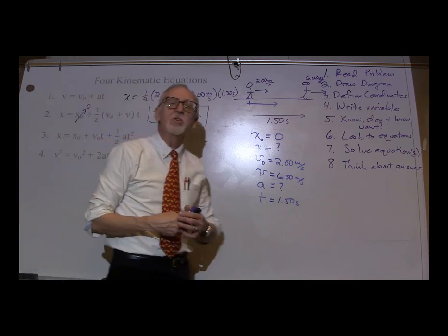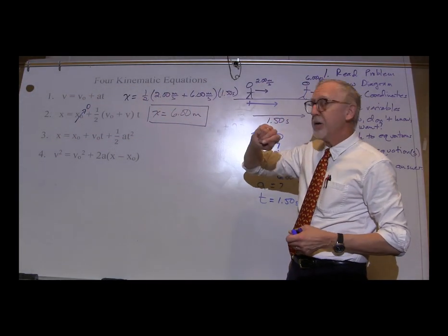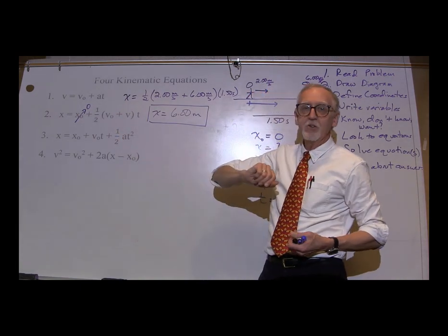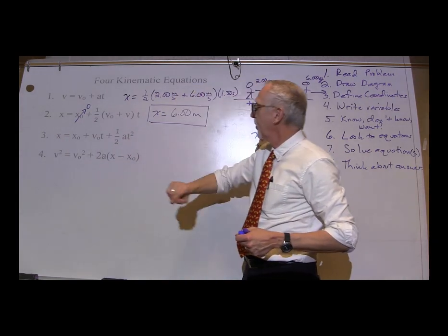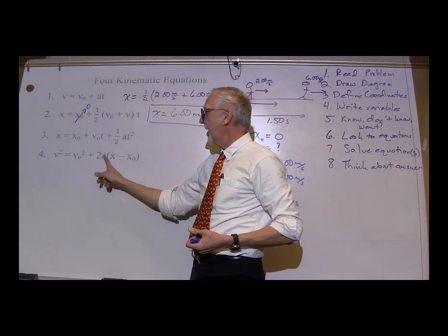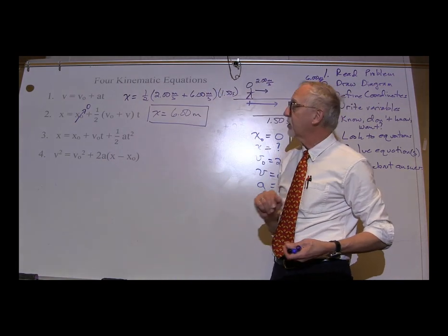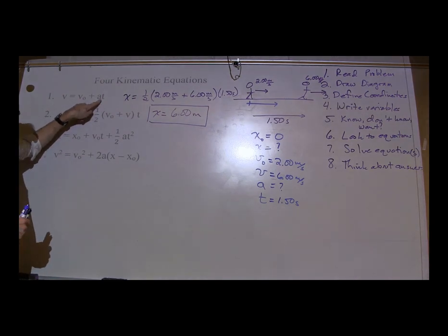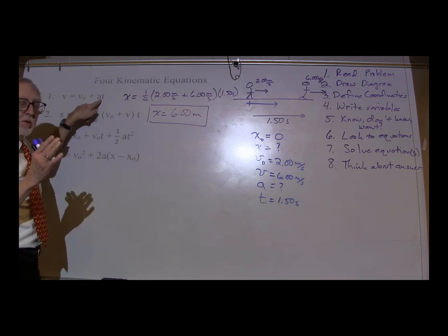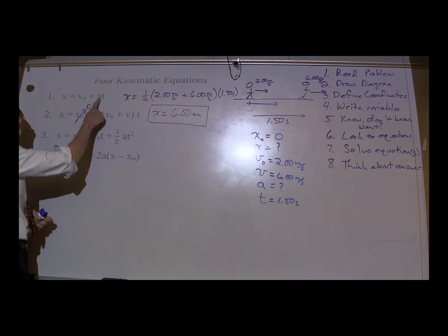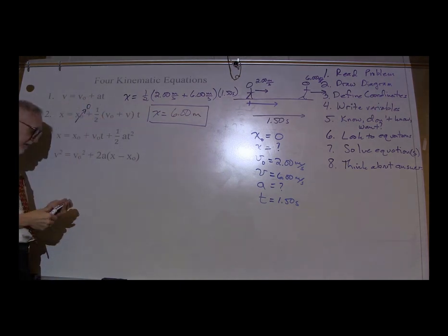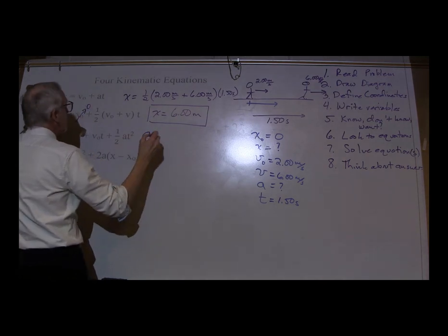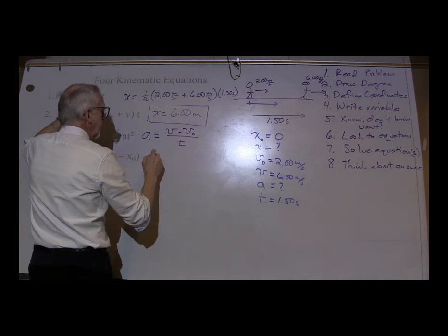What about A? Can we use the first equation to solve for A? Yes — it's got an A in it and we know everything else. Could we use the second equation? No, there's no A in it. Could we use the third equation? We could, but we would have to use our value for X. Fourth equation — again, we could, it's got an A in it, but we'd have to use our calculated value for X. So let's use the first equation. This is not actually solved for A, so let's solve the equation for A first.